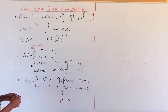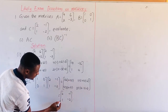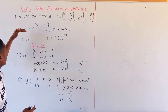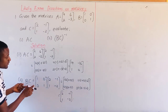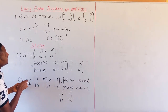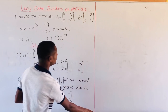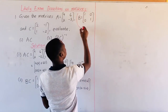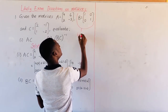Note that when matrix B is multiplied by any other matrix, the result is going to be that matrix. So we call matrix B an identity matrix.